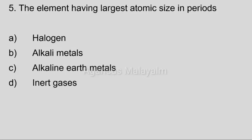Fifth question: The element having the largest atomic size in periods. Answer options — Option A: Halogen. Option B: Alkali metals. Option C: Alkaline earth metals. Option D: Inner gases. Correct answer: Option B, Alkali metals.